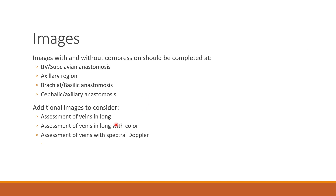For additional image views when B-mode transverse findings are uncertain, assess veins in longitudinal view, add color in long to look for any deviation patterns indicating thrombus disturbing blood flow, and use spectral Doppler to look for the expected phasicity from an open vein. Augmentation and a sniff test can also be added to enhance diagnostic capability.